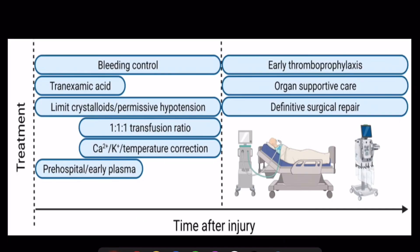The early stage can be treated with bleeding control, early administration of tranexamic acid, limiting crystalloid infusion, and administering balanced blood transfusion of red blood cells with early plasma and platelet products, whilst maintaining adequate electrolyte levels and temperature.